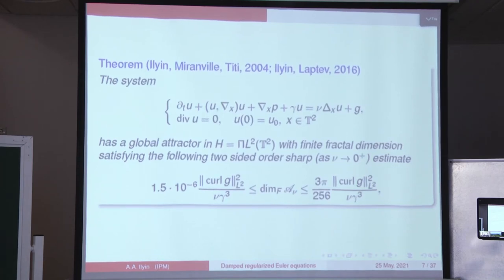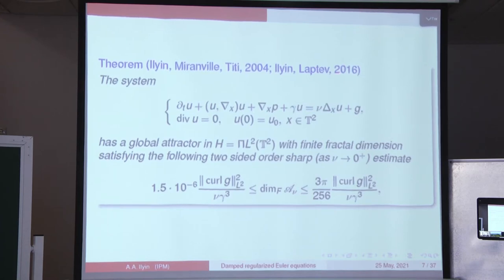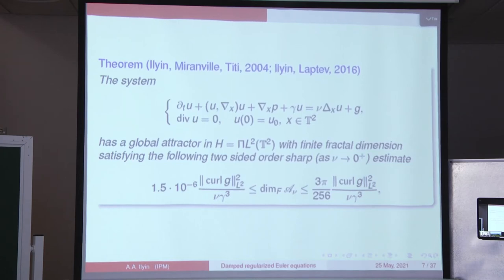In all our results, when we started with the damped Euler system with small Navier-Stokes perturbation, we were able to construct an attractor, and most importantly, we proved sharp two-sided estimates for its dimension. In this paper, we improved the constant because of the Lieb-Thirring inequalities on the torus, where Ari Laptiv helped me in this subject. The upper bound is universal, and the lower bound is realized on the so-called Kolmogorov flows — this is two-dimensional; I will speak about Kolmogorov flows a little bit later.